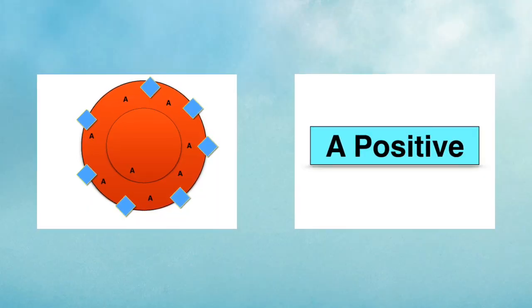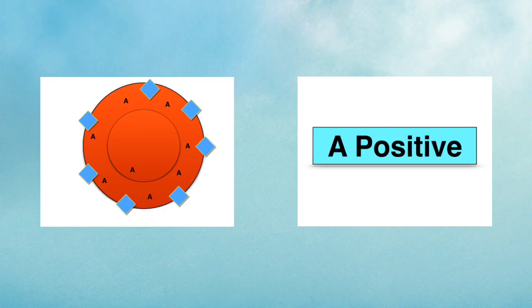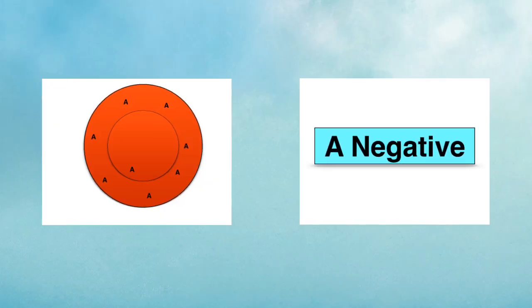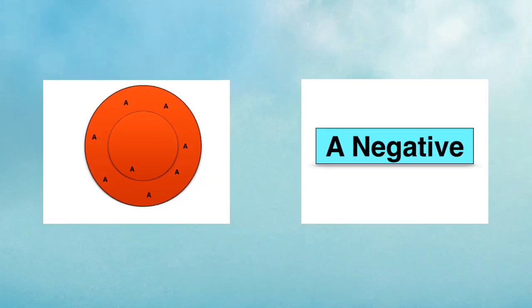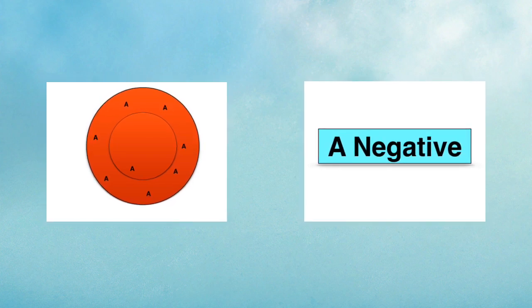Being A positive, for example, means that you have A antigens and the rhesus factor present on the surface of your red blood cells. If you're A negative, it means that you only have the A antigens present on the surface of your red blood cells and you do not have the rhesus factor.